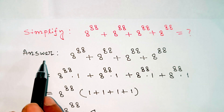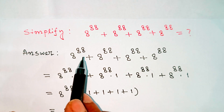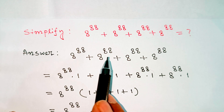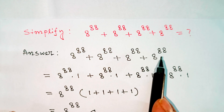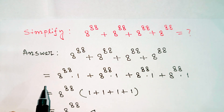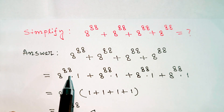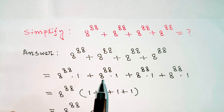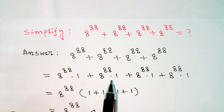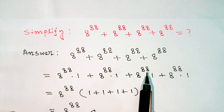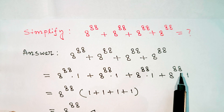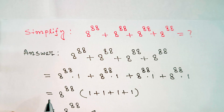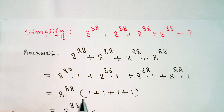8 power 88 plus 8 power 88 plus 8 power 88 equals 8 power 88 into 1, plus 8 power 88 into 1, plus 8 power 88 into 1. Taking 8 power 88 as common gives 8 power 88 into (1 plus 1 plus 1).